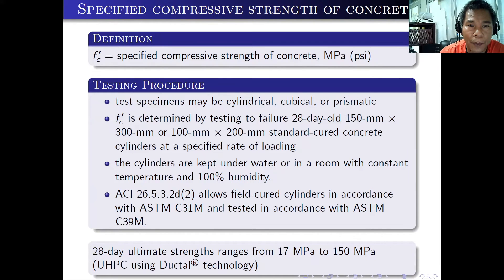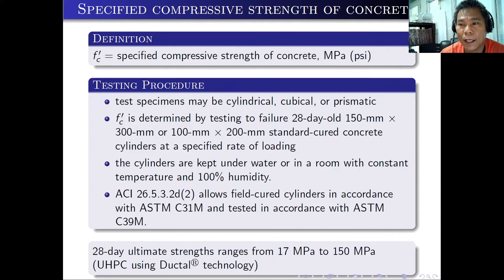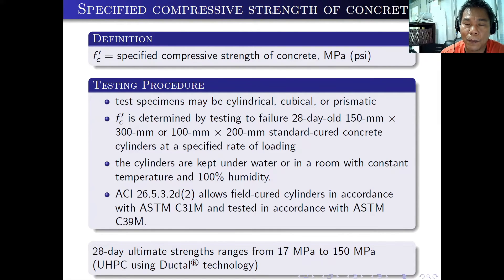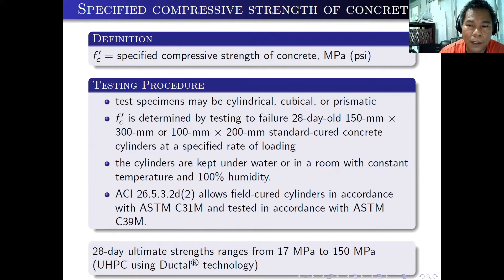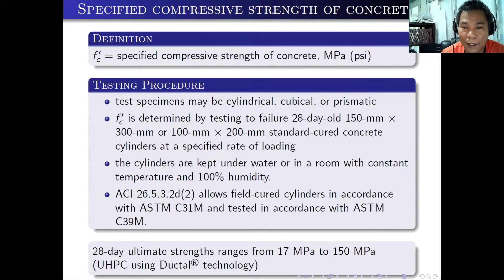We also have the specified compressive strength of concrete, normally designated as FC prime. FC prime is the specified compressive strength of concrete, with units of megapascal or psi (pounds per square inch). The testing procedure to determine FC prime uses test specimens that can be cylindrical, cubical, or prismatic.